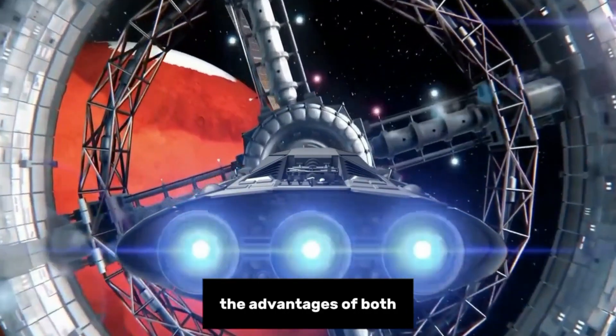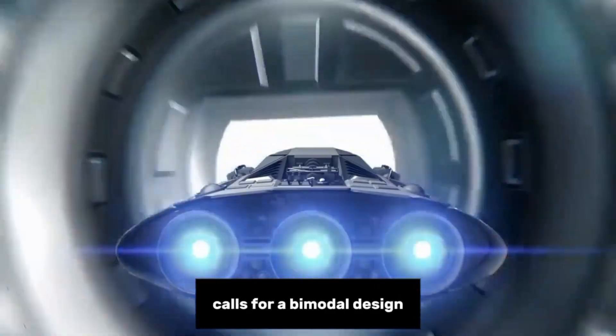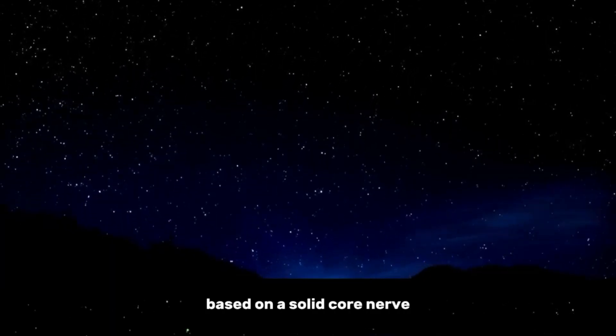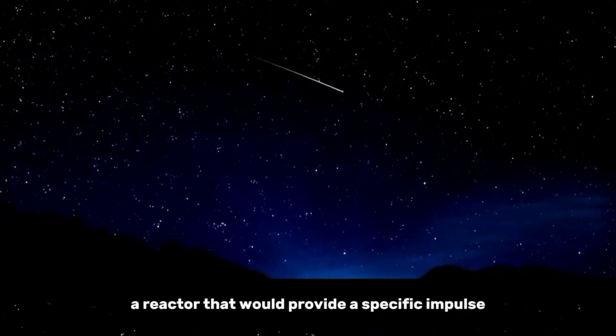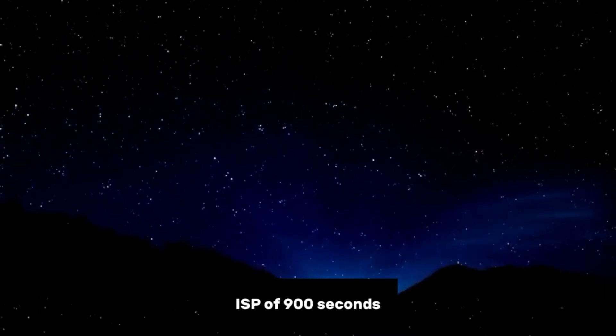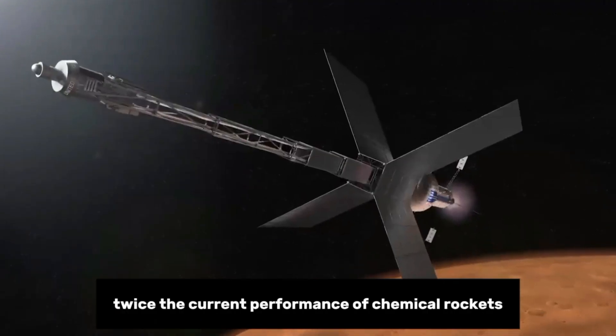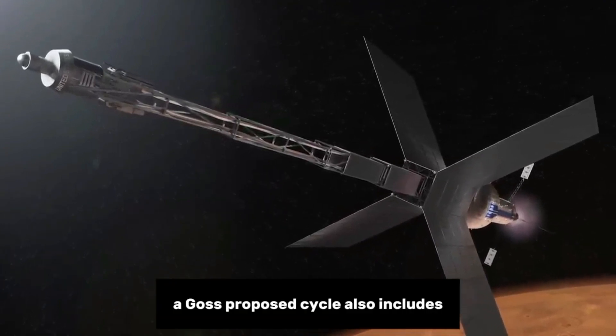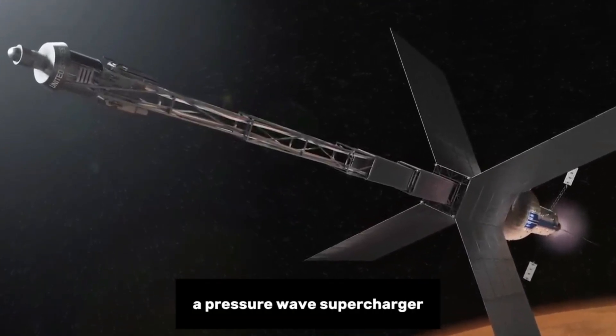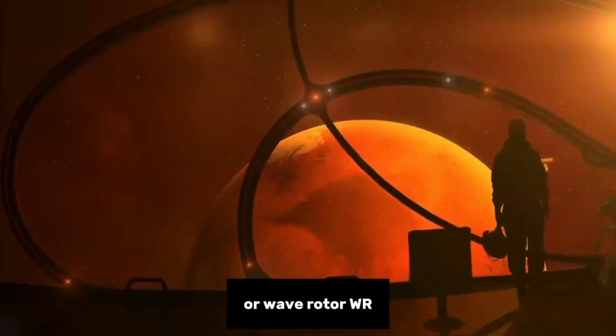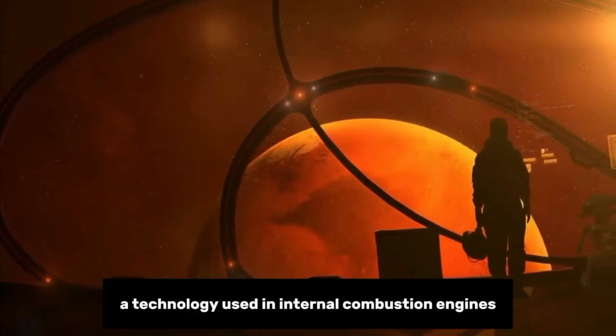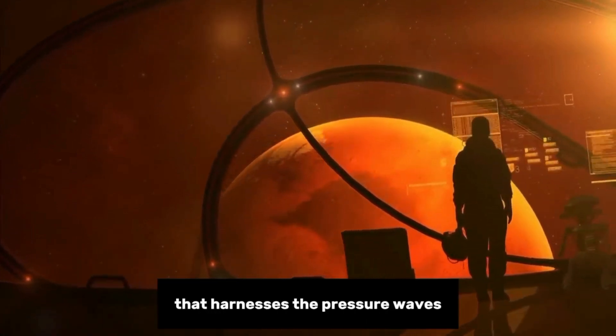Goss's proposal calls for a bimodal design based on a solid-core NERVA reactor that would provide a specific impulse (Isp) of 900 seconds—twice the current performance of chemical rockets. Goss's proposed cycle also includes a pressure wave supercharger or wave rotor (WR), a technology used in internal combustion engines that harnesses the pressure waves produced by reactions to compress intake air.